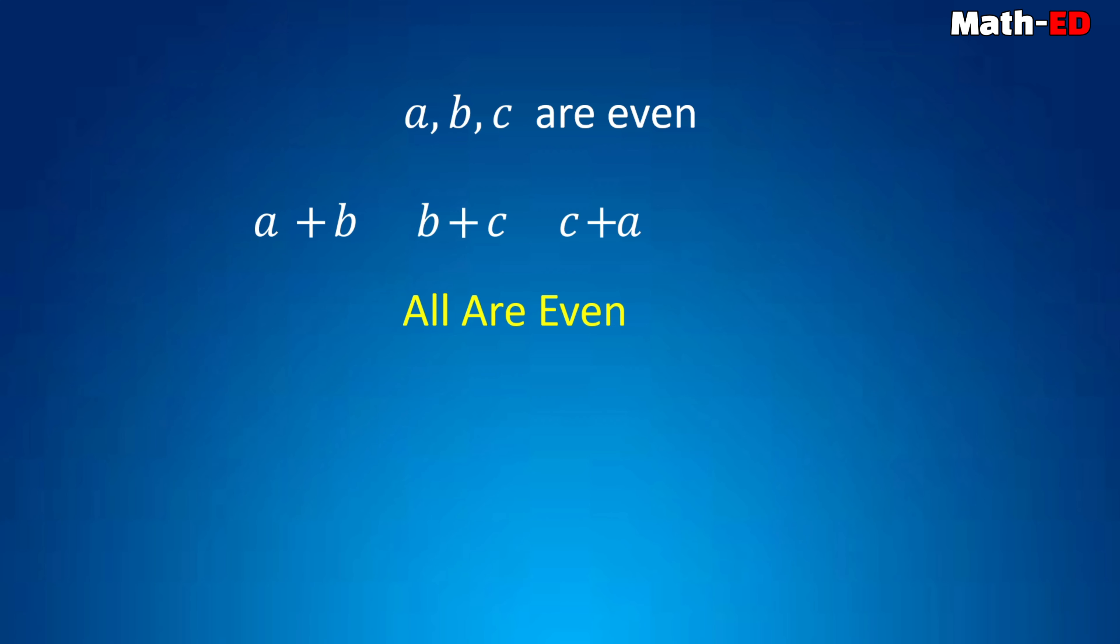So in that case, the squares cannot be consecutive. At least one of them will be odd. So in this case, without loss of generality, let's assume a is less than b is less than c.